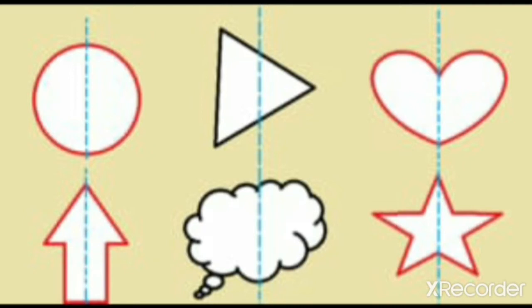Now let's check whether the objects are symmetrical or not. If we can divide the object into two equal parts, the objects are called symmetrical objects. Can we divide this circle into two equal parts? Yes, it's a symmetrical object.